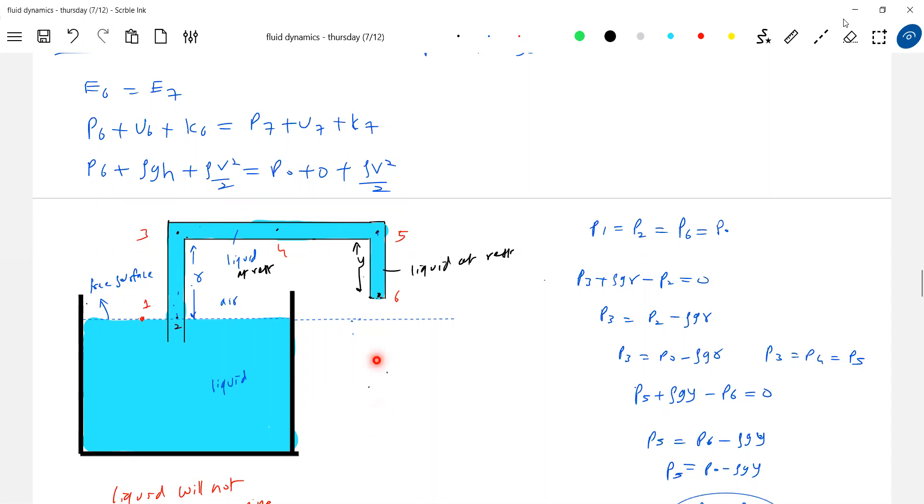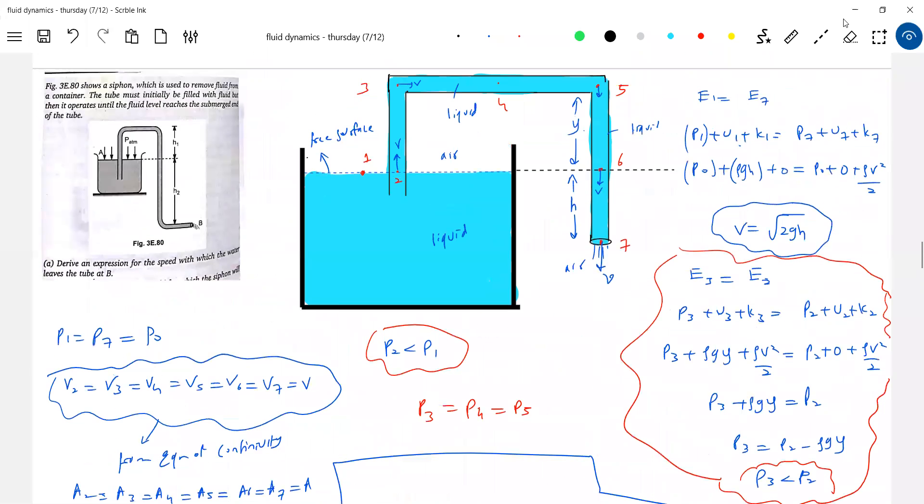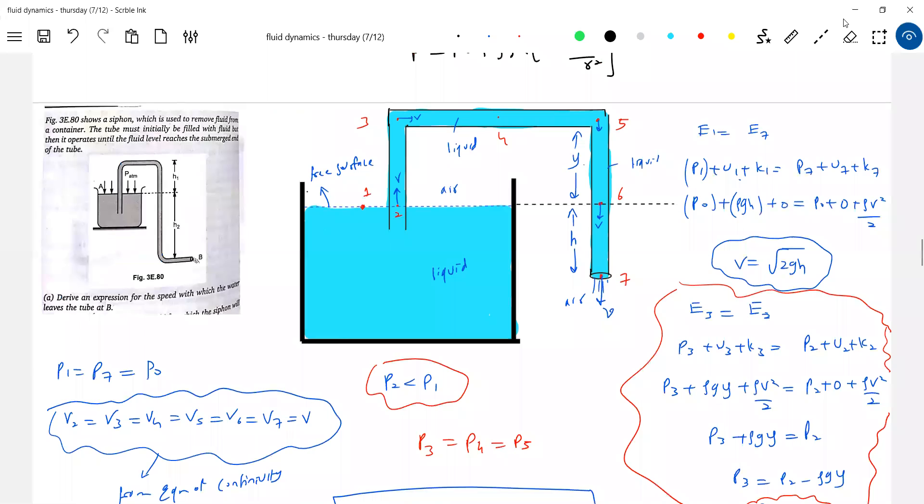How much more you make this length? So if you increase this length H, the liquid will come out with more speed. So there's a method of taking out liquid from a tank.